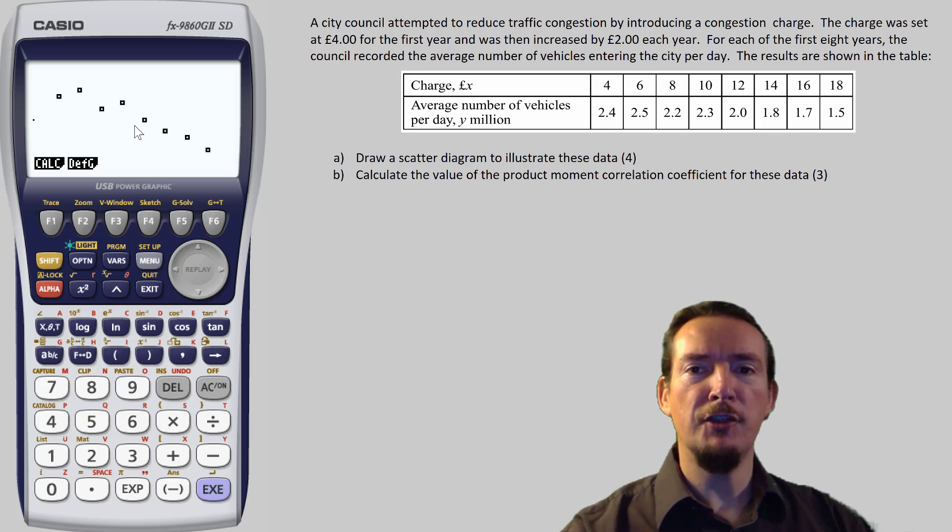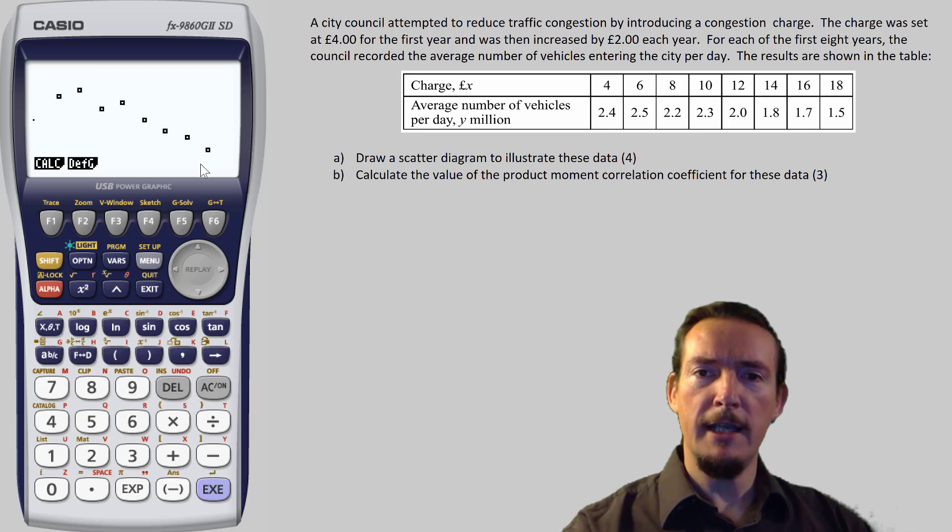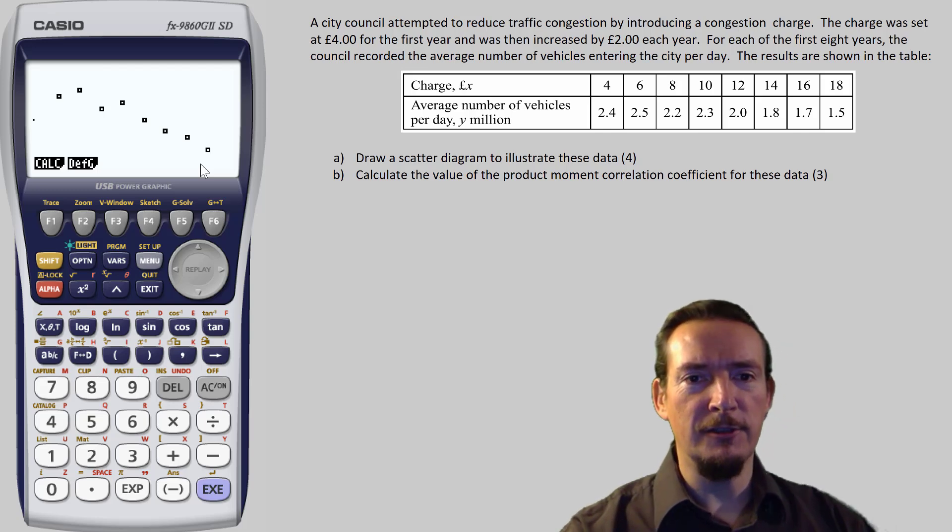Unsurprisingly, we have a scatter graph showing strong negative correlation. This fits with the context, as we suspected that as the charge went up, it would drive the number of vehicles down.